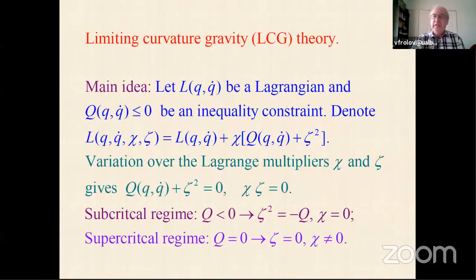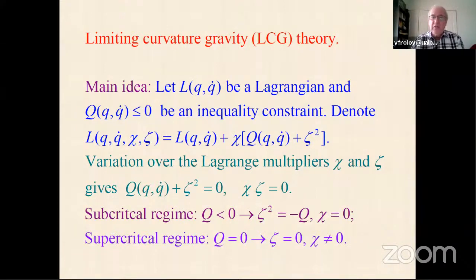I will describe an idea for constructing a limiting curvature model by slightly modifying the standard gravitational model. The basic idea is simple: suppose we have a Lagrangian L and an observable Q, and we want to impose the condition that Q is restricted to some value — specifically, that Q remains negative and never becomes positive. To incorporate this property, we introduce a new Lagrangian that depends on Q as well as two Lagrange multipliers, chi and zeta.